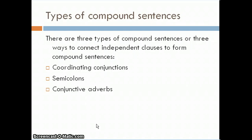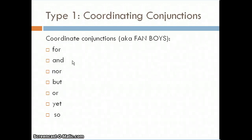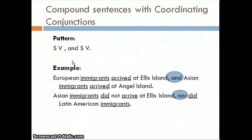The first type uses coordinating conjunctions, also known as FANBOYS — an acronym to help remember them. F stands for 'for,' A for 'and,' N for 'nor,' B for 'but,' O for 'or,' Y for 'yet,' and S for 'so.' So the coordinating conjunctions are: for, and, nor, but, or, yet, and so.